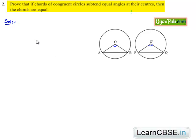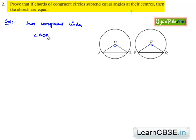Therefore, considering triangle AOB and triangle PO'Q, we need to prove that AB is equal to PQ.